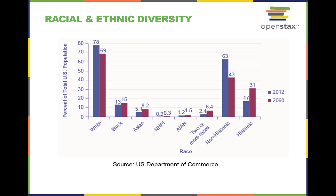Diversity in the workforce is projected to change over time. This figure shows projected changes in the ethnic makeup of the U.S. population by 2060. Note that NHPI stands for Native Hawaiian and other Pacific Islander, and AIAN stands for American Indian and Alaska Native.